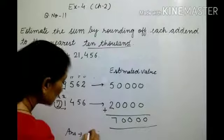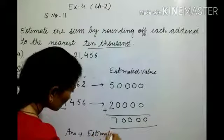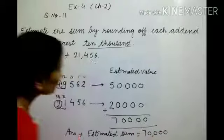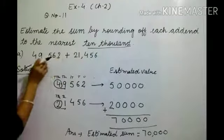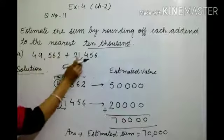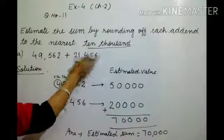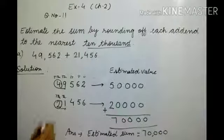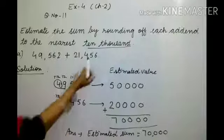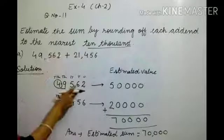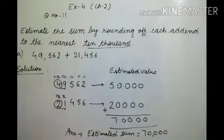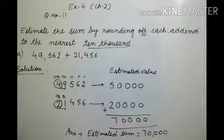The estimated sum is 70,000. One more thing: in the numbers, a comma is used to write the figures, but in rounding off we can avoid the comma and write simply without it. To summarize: round off the first number to the nearest ten thousand, round off the second number to the nearest ten thousand, then add the estimated values to find the estimated sum. Hope you understand questions 10 and 11. Have a nice day, bye bye.